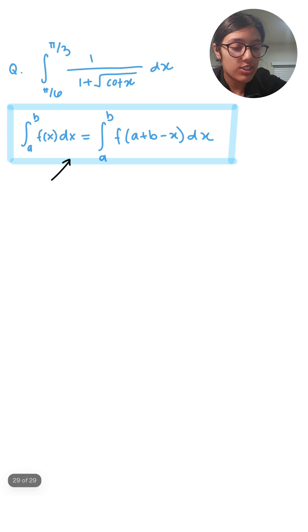I'm giving you a hint that we're going to be applying. First, I want to set this equal to I. So I equals the integral, and I'm going to rewrite cot x as cos x over sin x.